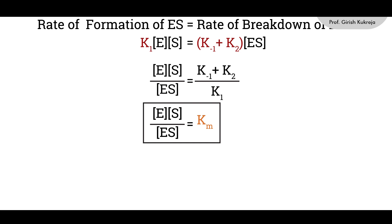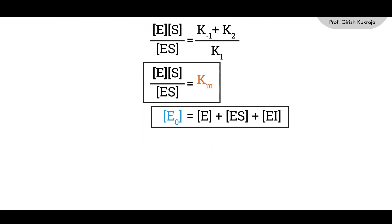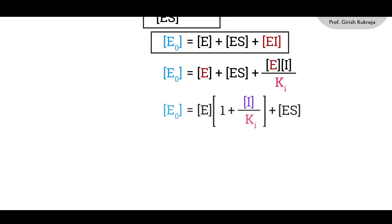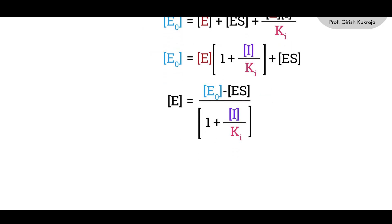Considering total enzyme E0, which equals the sum of free enzyme E, enzyme bound to substrate ES, and enzyme bound to inhibitor EI: E0 = E + ES + EI. Substituting EI = (E · I) / Ki, we get E0 = E · (1 + I/Ki) + ES. Solving for free enzyme E: E = (E0 − ES) / (1 + I/Ki).